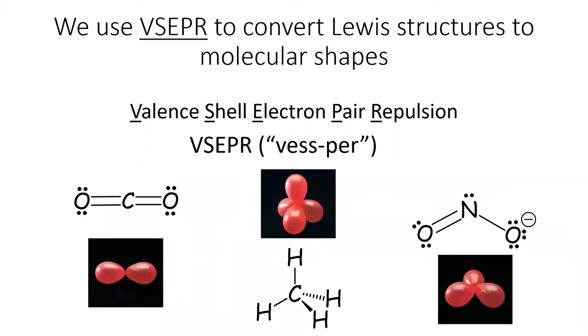VSEPR stands for valence shell electron pair repulsion, and it's a technique of turning a Lewis structure into a three-dimensional shape. The VSEPR procedure can be neatly summarized as follows.